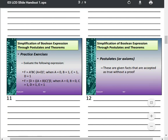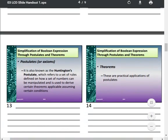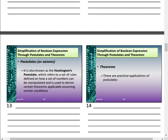These are called the Huntington postulates, which refer to a set of rules defining how a set of numbers can be manipulated. They are used to derive theorems applicable in certain conditions. Postulates are given facts — rules that need no proof. Theorems are the practical applications of postulates, but theorems can also serve as rules themselves.